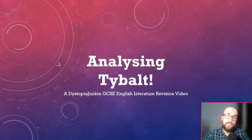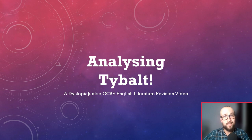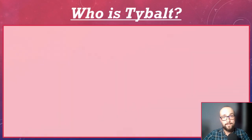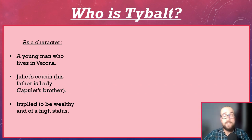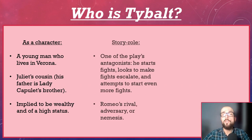Now that all of that introductory stuff is out of the way, just who is Tybalt, what is his story role, and what might he represent? As a character, Tybalt is fairly straightforward. He's Juliet's cousin, with his father being Lady Capulet's brother. This means that he is associated with the Capulet family, giving him a certain status within Verona and suggesting he comes from a wealthy background, since Lord Capulet would not have married somebody poor.